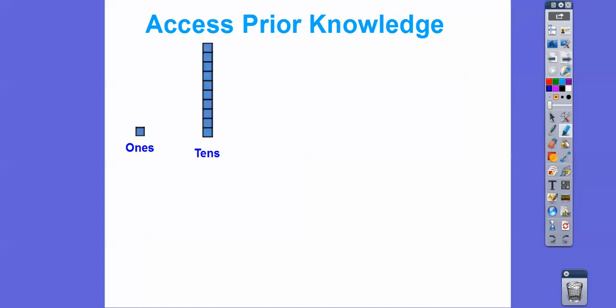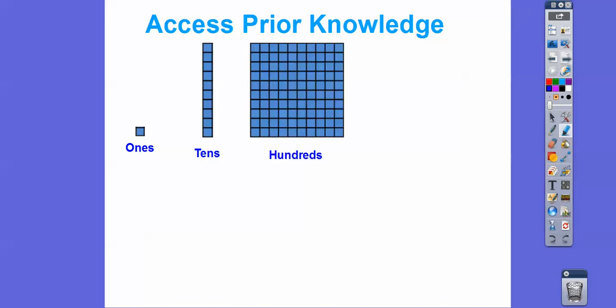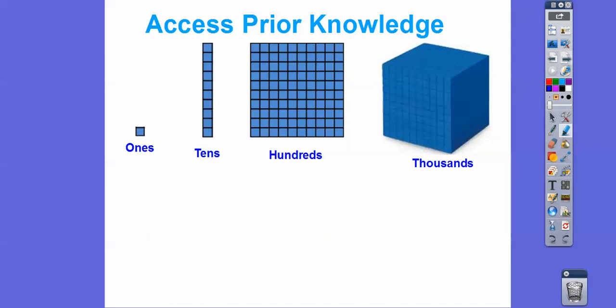And then when you have ten of them, in fourth grade they call it a stick or a straight. And then here's the hundreds block. Later when we get going in the higher grades, we're going to talk about thousands — that'll be a little bit later.